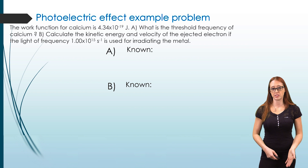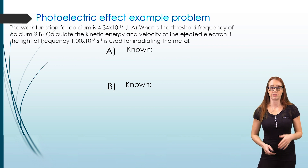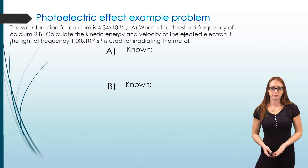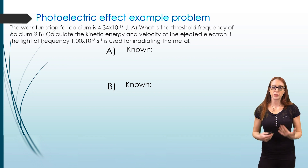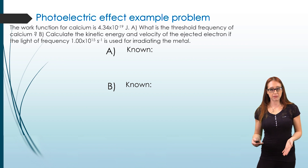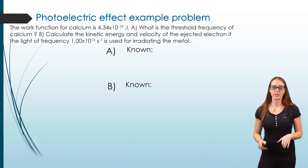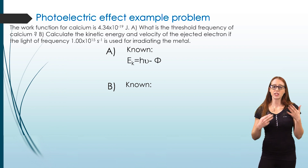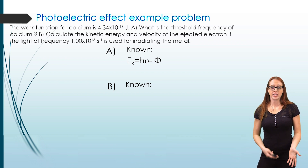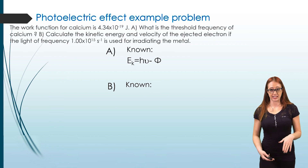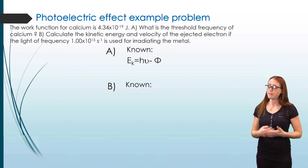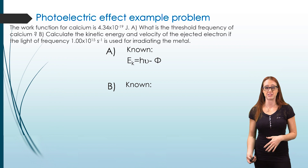Let's do an example problem using this equation. I give you the work function for calcium and ask for the minimum frequency of light required to eject the electrons — in other words, the threshold frequency. This is going to be a two-step problem: first we find the threshold frequency, and then we find the kinetic energy and velocity at a different frequency of light. This is a very stereotypical problem for this chapter, so please make sure you can replicate this on your own.